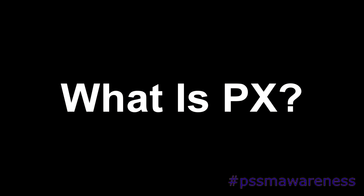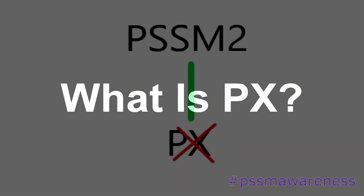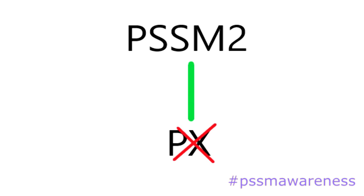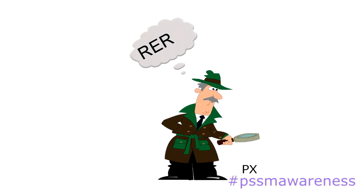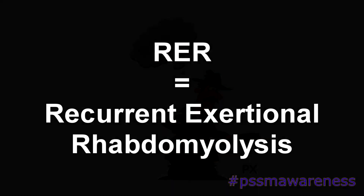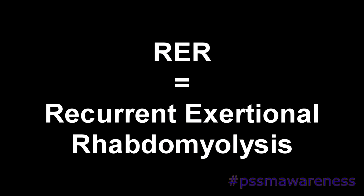What is PX? PX is not a variant of PSSM2, but it is a suspected variant of RER, which stands for Recurrent Exertional Rhabdomyolysis.